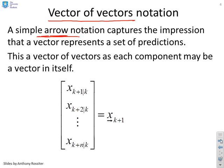So you'll see here, the way we've done this expression, we've said let's write down a vector of future predictions for this state. I've got xk plus 1 at k, xk plus 2 at k, all the way down to xk plus n at k.